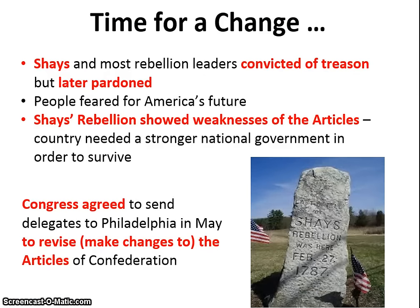So what was the result, and why was Shays' Rebellion important? Shays and most of the rebellion leaders were tried and convicted of treason, but they were later pardoned — there were no severe punishments. However, people began to lose confidence and have fear for America's future. Shays' Rebellion showed the weaknesses of the Articles government: without the ability to control trade or raise revenue, the country needed a stronger national government to survive. As a result, Congress agreed to send delegates to Philadelphia in May 1787 to revise the Articles of Confederation.